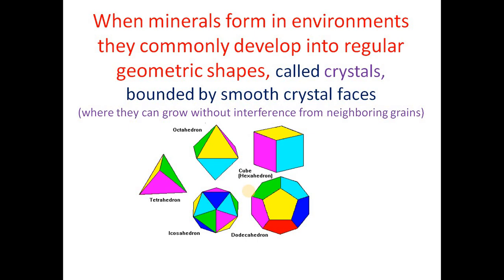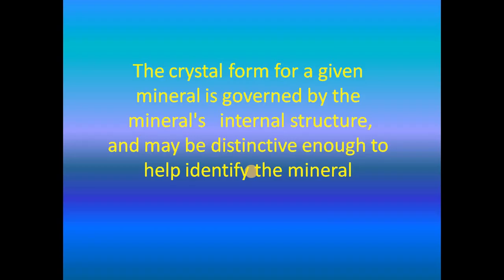For example, if we see the picture, one is cube — that is the shape, or we can say the form for the mineral. Cube is one example for form, octahedron is another example, tetrahedron, icosahedron, dodecahedron are some other forms used for some minerals. The crystal form for a given mineral is governed by its internal structure and may be distinctive enough to help identify the mineral.